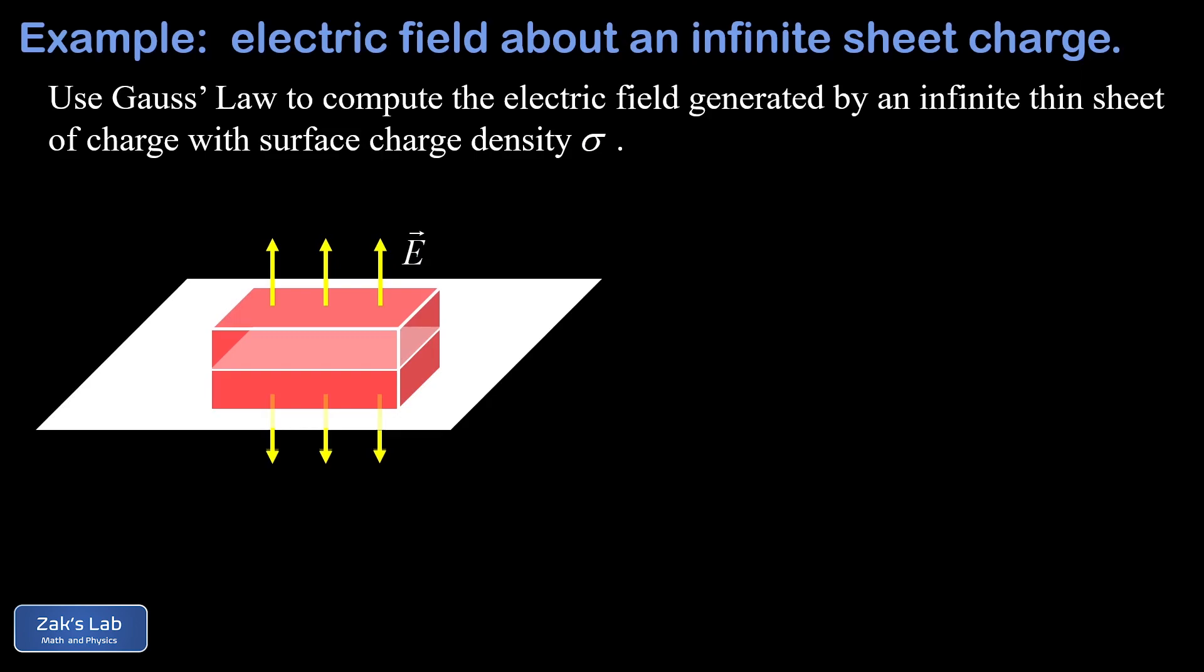So we label our Gaussian surface here and get ready to apply Gauss's law. Gauss's law says that the total electric flux through this closed surface, the integral of E dotted into dA where each of those little area elements dA has the direction of the normal vector to the surface, in other words the perpendicular, that total electric flux across the closed surface is going to be equal to the enclosed charge divided by epsilon zero, the permittivity of free space.